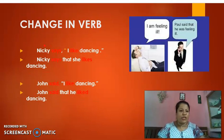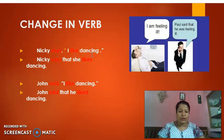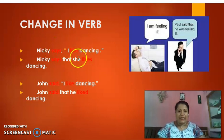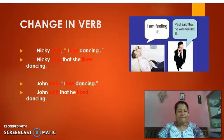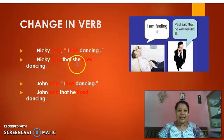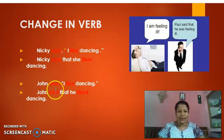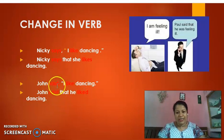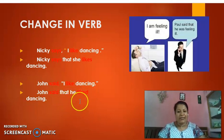The next one is your change in verb. Nikki says, 'I like dancing.' The verb — whenever the tense is 'says,' this will also be in the present tense. Whenever this is in the past tense, that is 'said,' this automatically changes to the past tense. So Nikki says that she likes dancing — this verb is also in the present tense. But John said, 'I like dancing' — because this is in the past tense, this also becomes past tense: John said that he liked dancing.